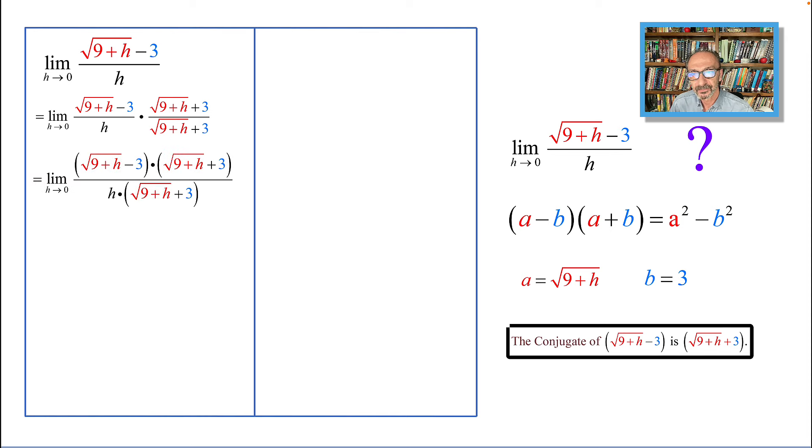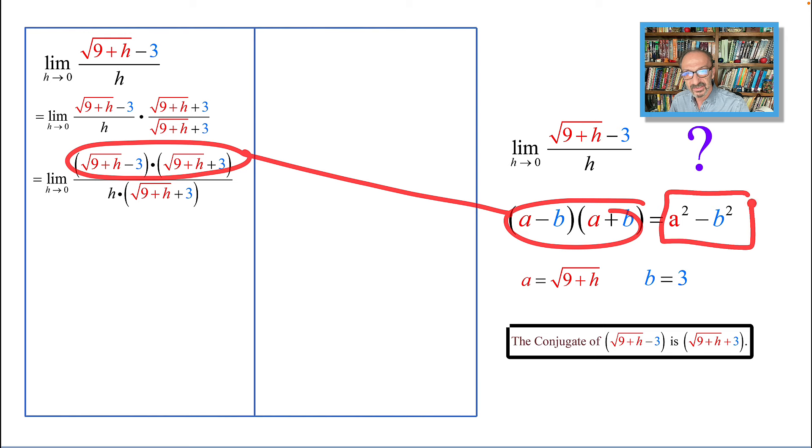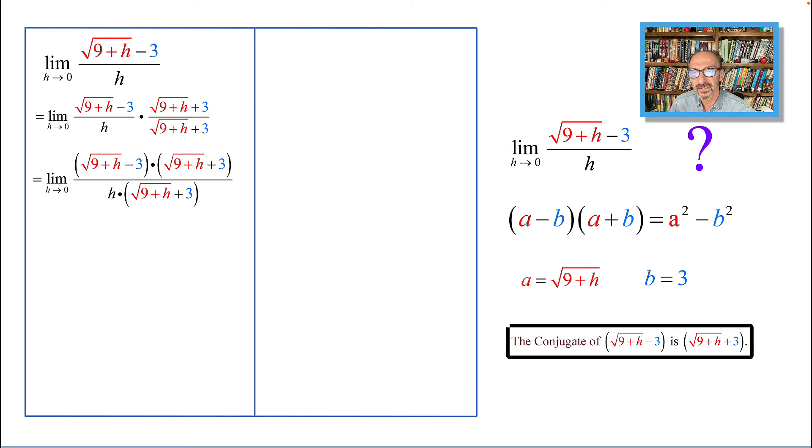But the left hand side right here, or the top side, is the left hand side of this formula. So by connecting this to this, we could move on to the right hand side, which is a squared minus b squared.